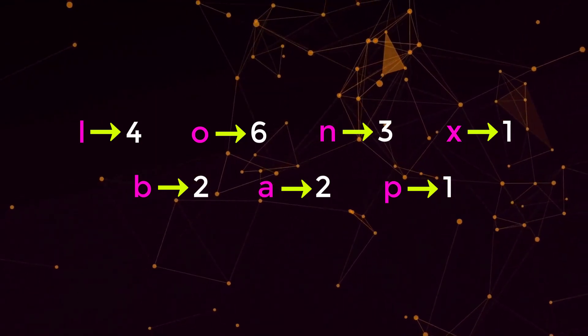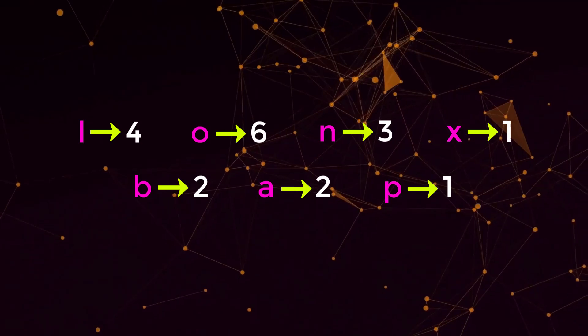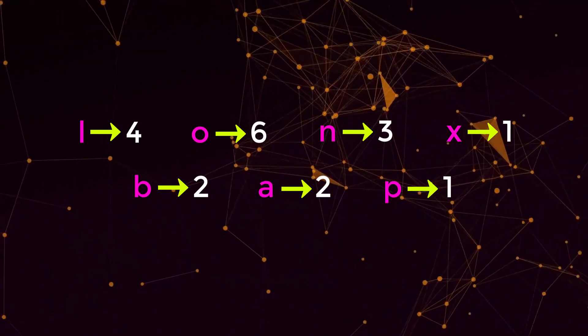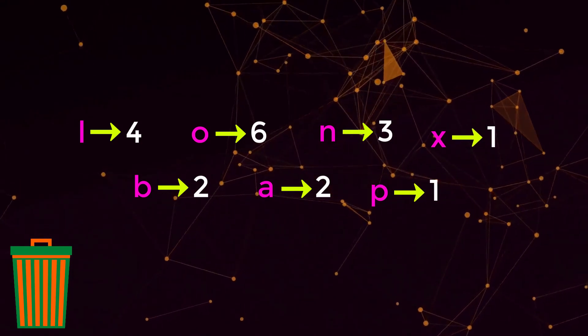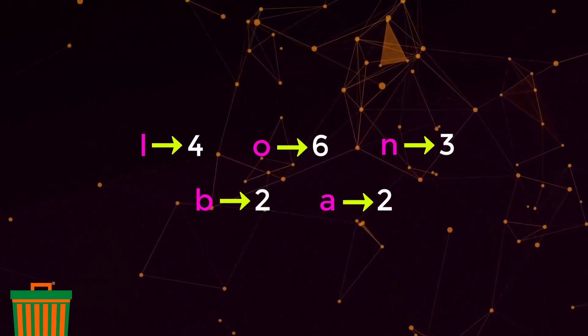So now that we have our counts, we just need to determine how many times we can make up the word balloon. So the only characters that we care about are b, a, l, o, and n, because those are the characters that make up the word balloon.